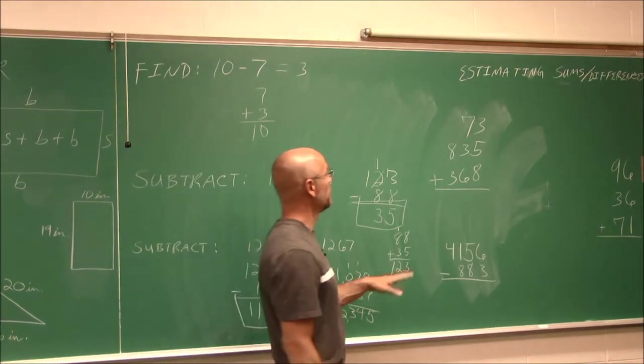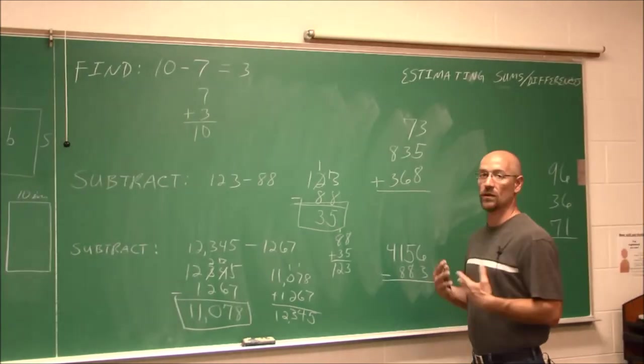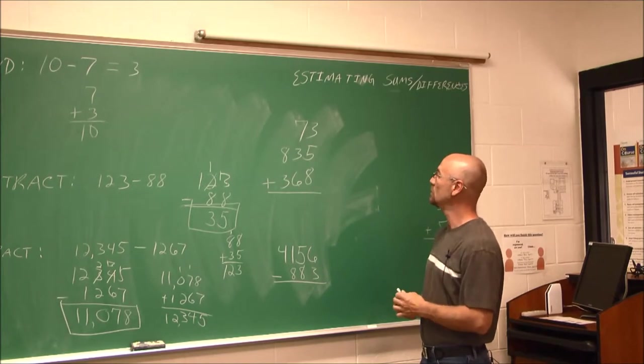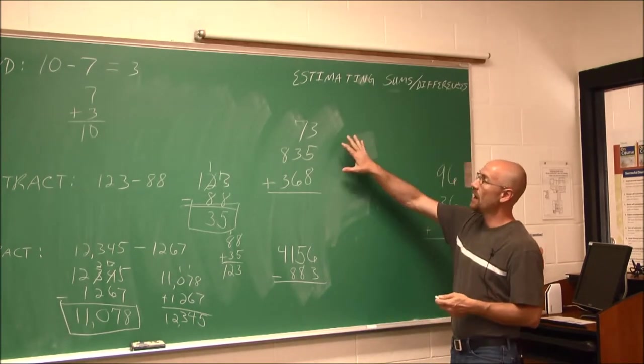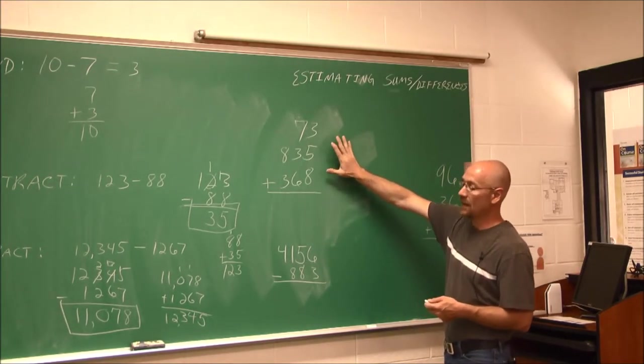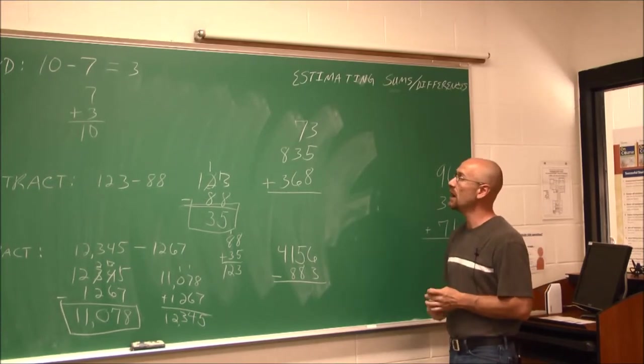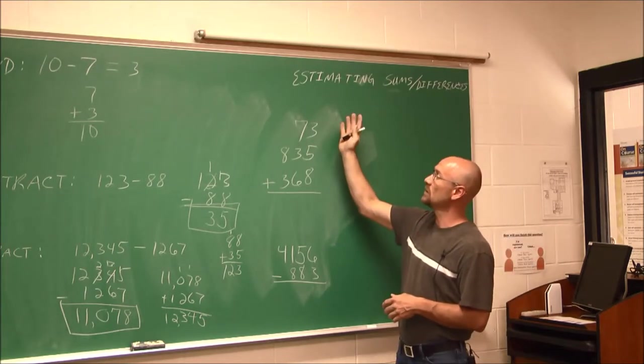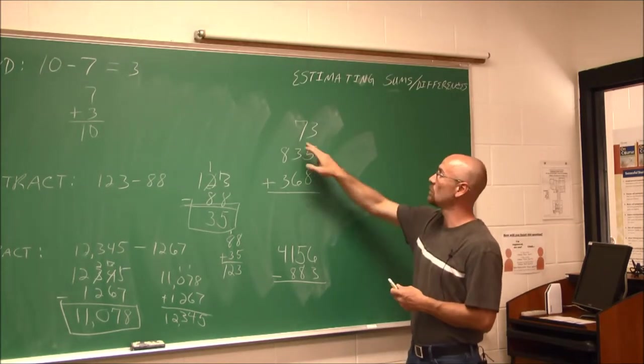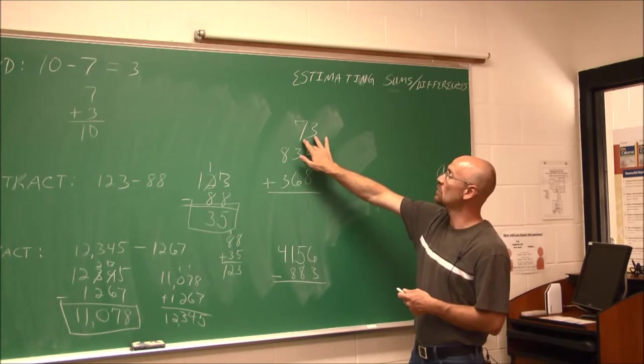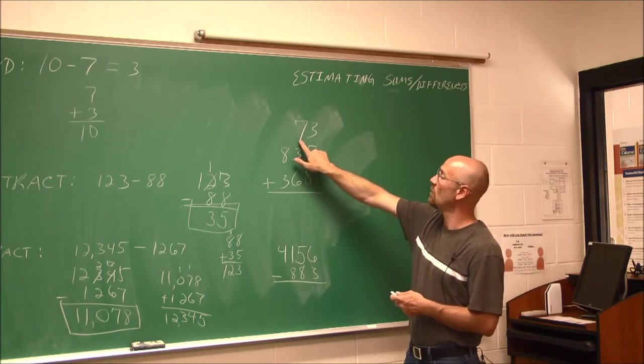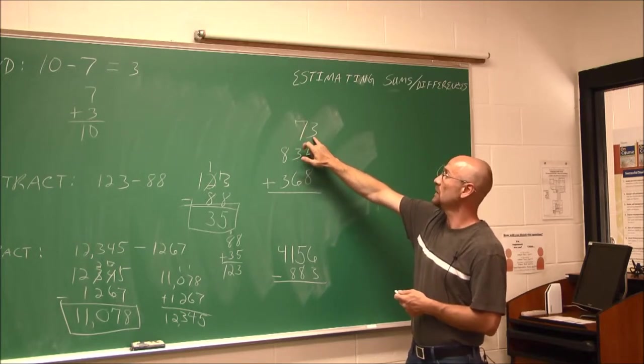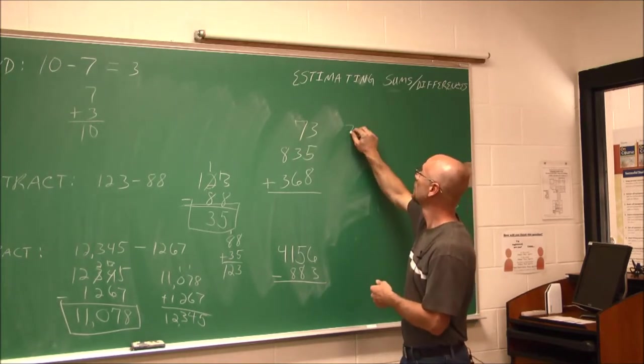The next thing we're going to look at is estimating the sums or differences of numbers. It's kind of a combination of the first video for this chapter here, and rounding, and adding, and subtracting. So we're going to combine them all. And the first thing we're going to do is to estimate. What we're going to do is we're going to go to the leftmost digit, and we're going to round each of these. If I'm going to round 73, I'm going to the leftmost digit. I want to round to this place, the tens place.